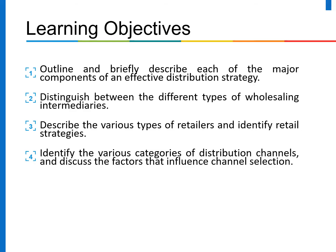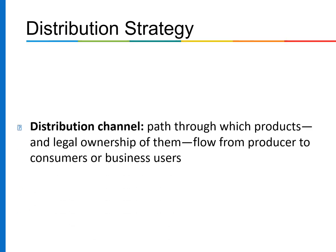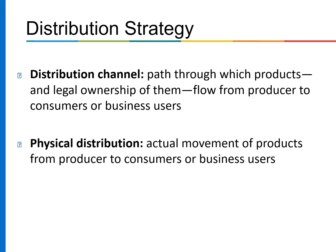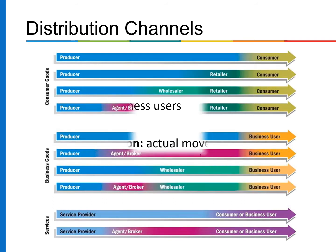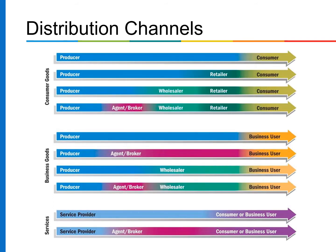Distribution strategy deals with the marketing activities and institutions involved in getting the right product or service to the firm's customers. Marketing channels are made up of retailers and wholesalers that move the product through the channel to the customers. A distribution channel is a path through which products and legal ownership of them flow from producer to consumers or business users. Physical distribution is the actual movement of products from producer to consumer or business users.